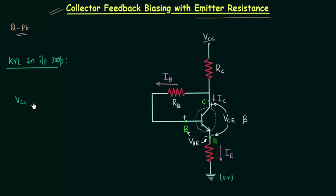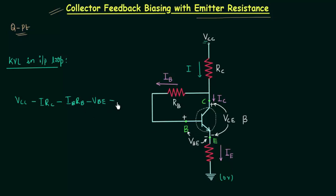So we have VCC minus the drop across resistance RC. Let's say the current flowing through RC is equal to I. So the drop is IRC, minus the drop across this resistance IB·RB, minus VBE, minus the drop across emitter resistance IE·RE, equal to 0. This is the equation, and first we have to find out current I.